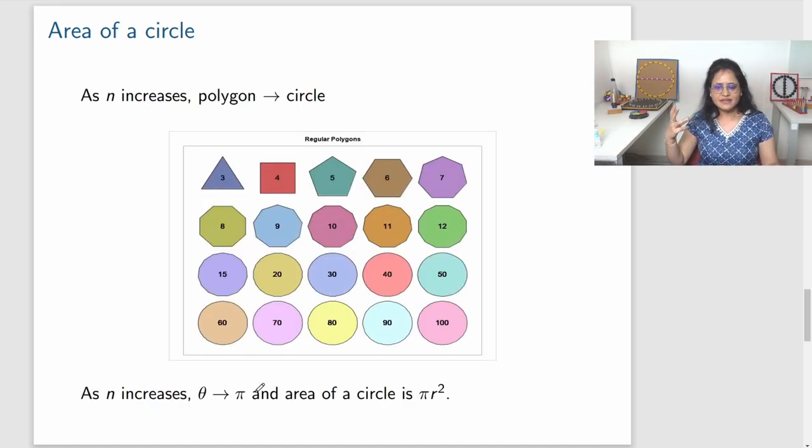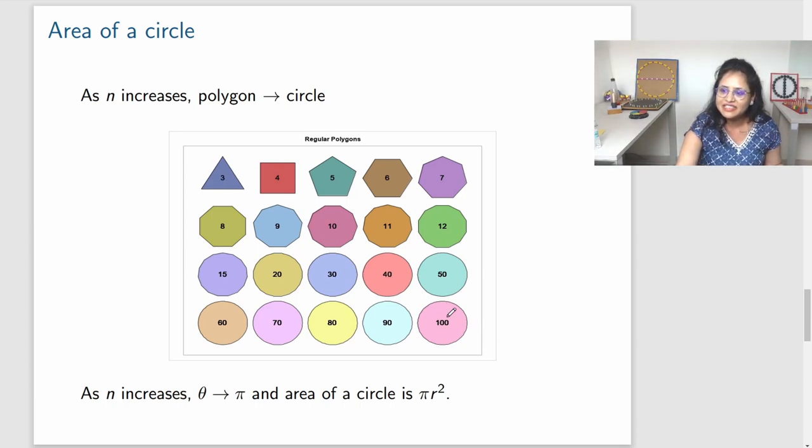When I increase N, then we see that polygon is actually looking like a circle. You can see in this picture that when I have a triangle, it's very different from a circle. But when I take a hundred gon, which has hundred sides, it's approximately a circle. If I see it from far away, I can't even tell that it's a polygon, not a circle. So when I increase N, the number of sides of the polygon, then this theta, which was defined as perimeter divided by 2 times the radius, is actually pi. This is the definition of pi. It is tending to pi and the area of circle is that is why pi R square.